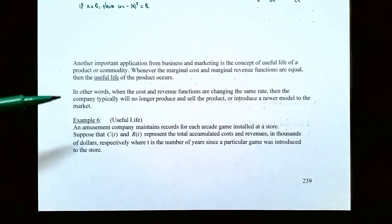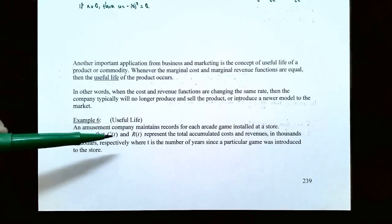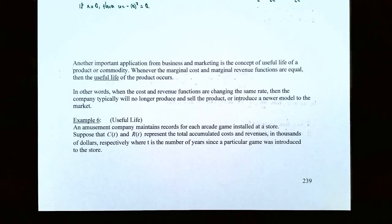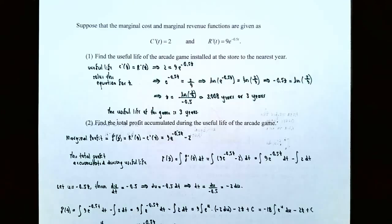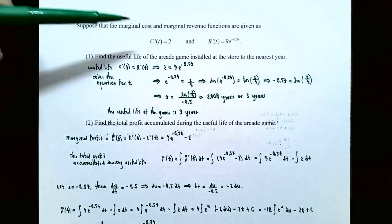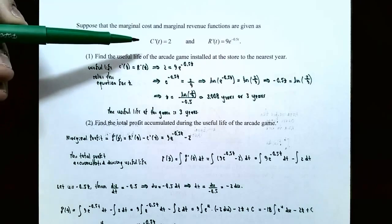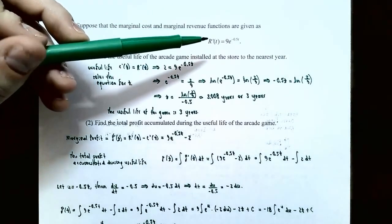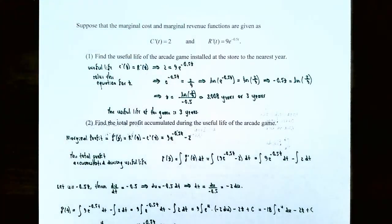Let's look at example six: useful life. An amusement company maintains records for each arcade game installed at a store. C of t and R of t represent the total accumulated cost and total accumulated revenues in thousands of dollars, where t is the number of years since the game was introduced. The marginal cost function is C prime of t equals two, and the marginal revenue function is R prime of t equals nine times e to the negative 0.5t power.